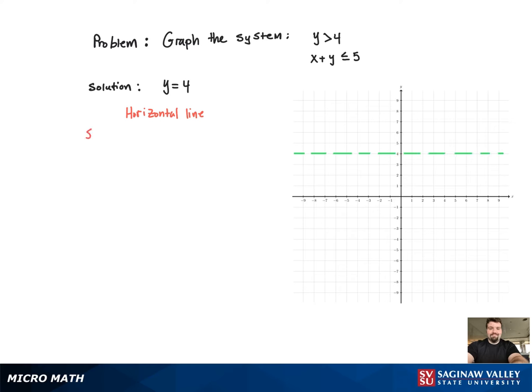Since it's an inequality, we need to shade a region. To figure out whether we shade above the line or below the line, we need to use a test point. The test point we're going to use is 0, 0. When we plug it in, we get 0 greater than 4, which is false. So we're going to shade above the line, since 0, 0 is contained below the line.